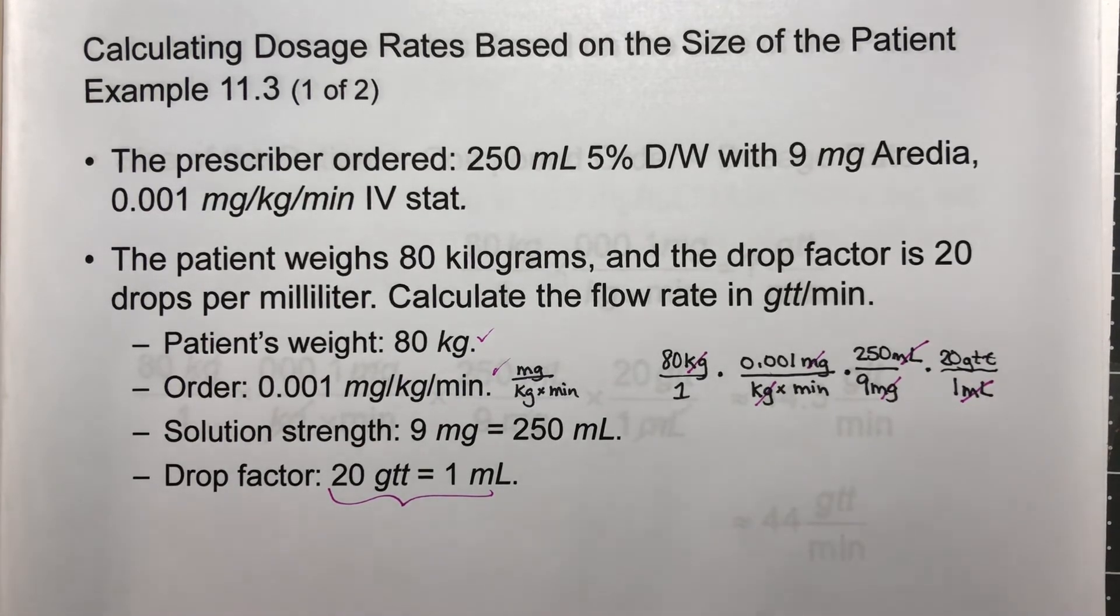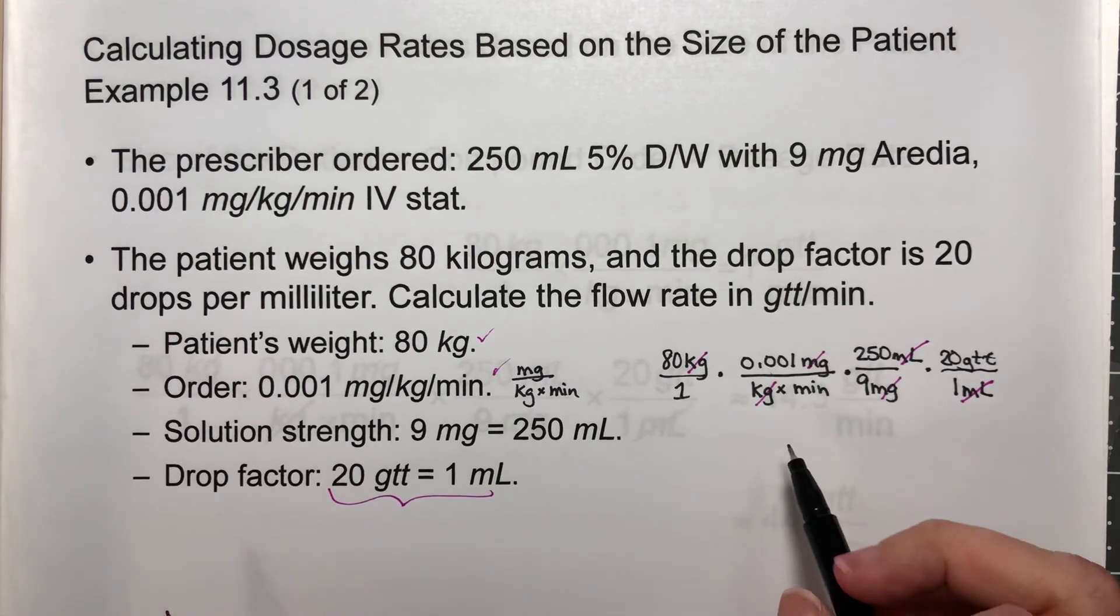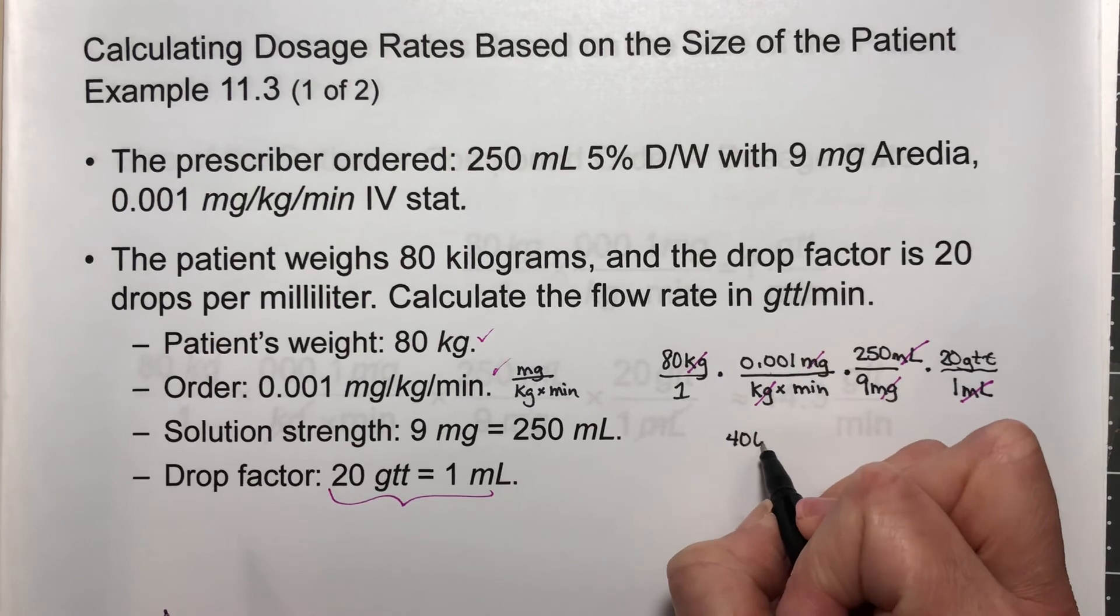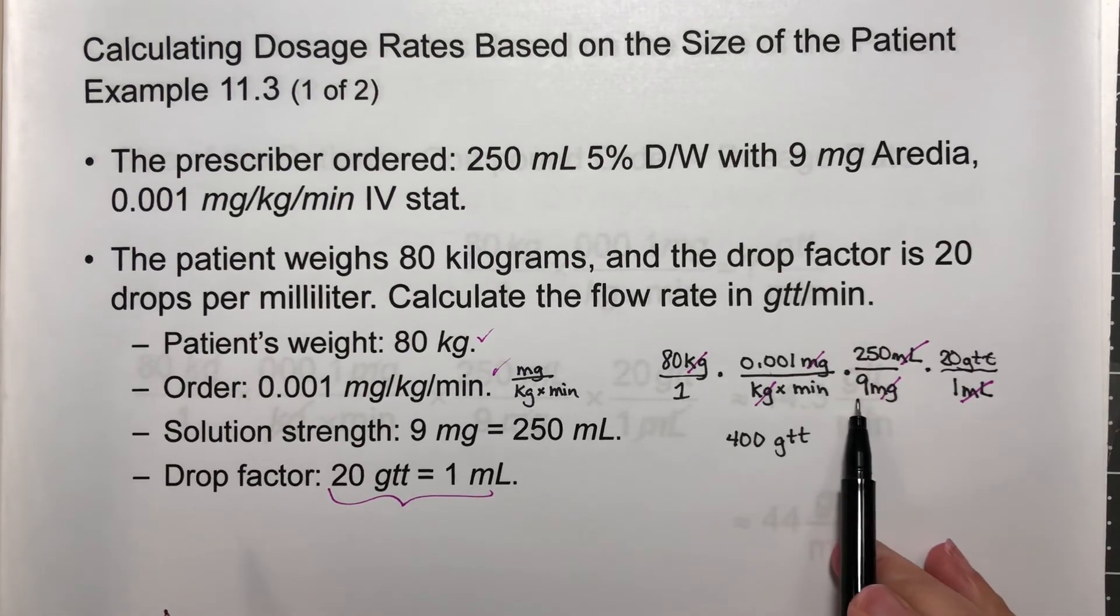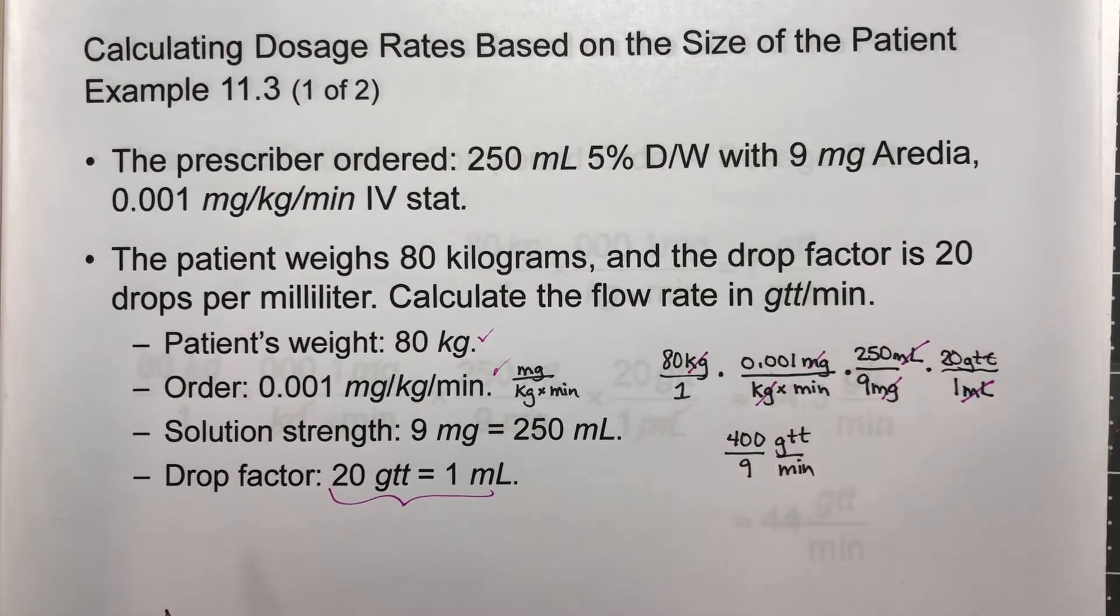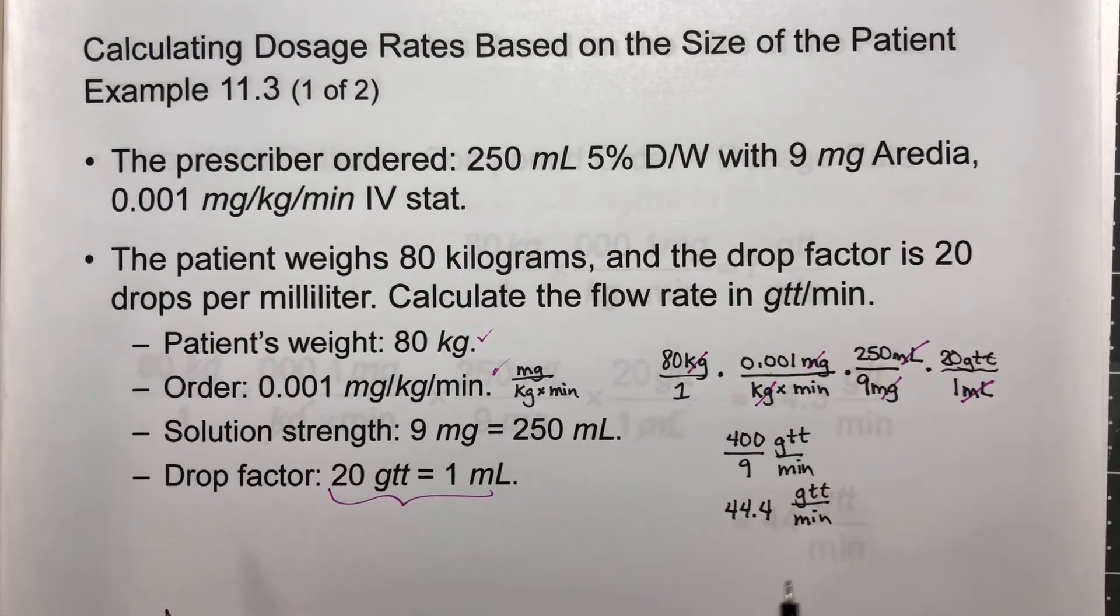I just need to do the multiplication. If you multiply straight across, I would do 80 times 0.001 times 250 times 20, and that gives you 400. In the bottom, I have 1 times 1 times 9 times 1, so that's just 9. My units are minutes. If you divide 400 by 9, you get 44.4. They'll want you to round this. It's a 4, so they're going to want you to round it down, so the answer they're looking for is 44.